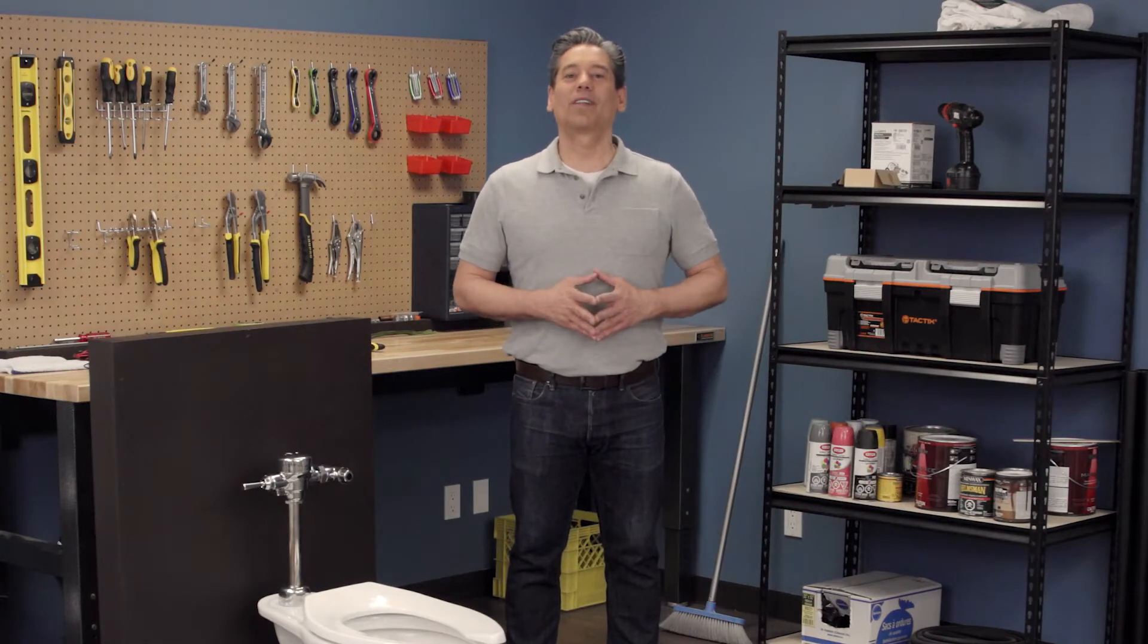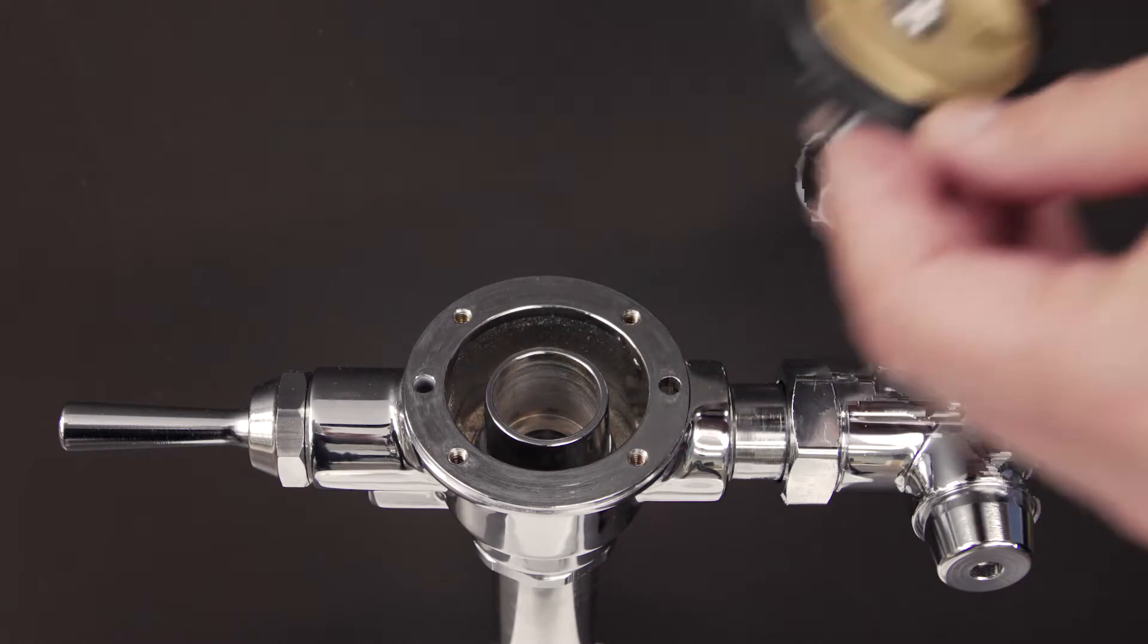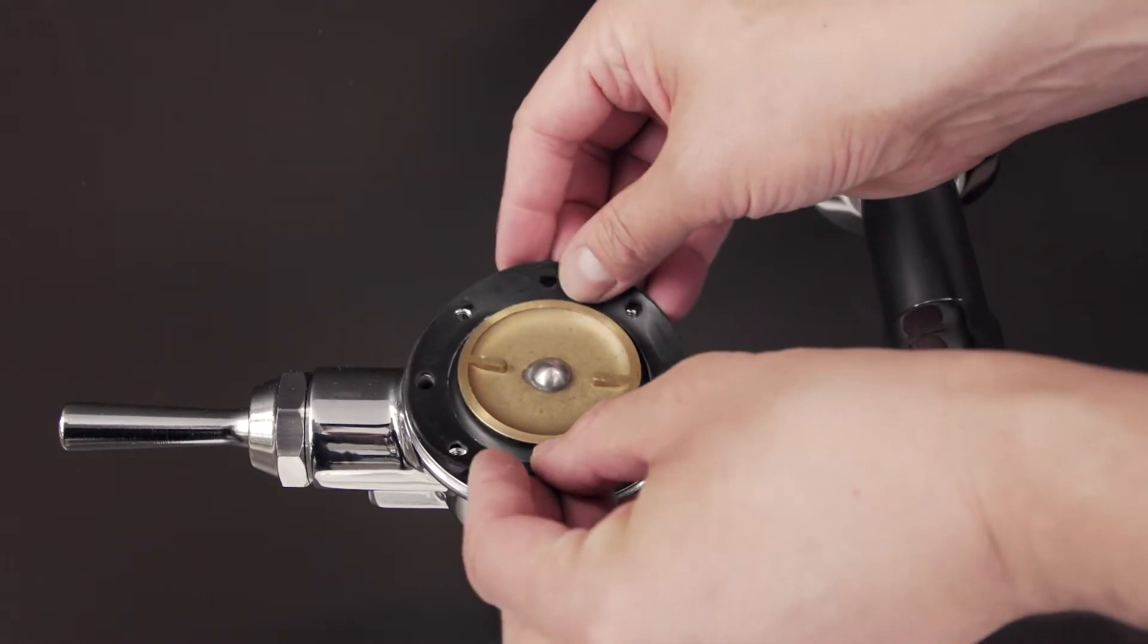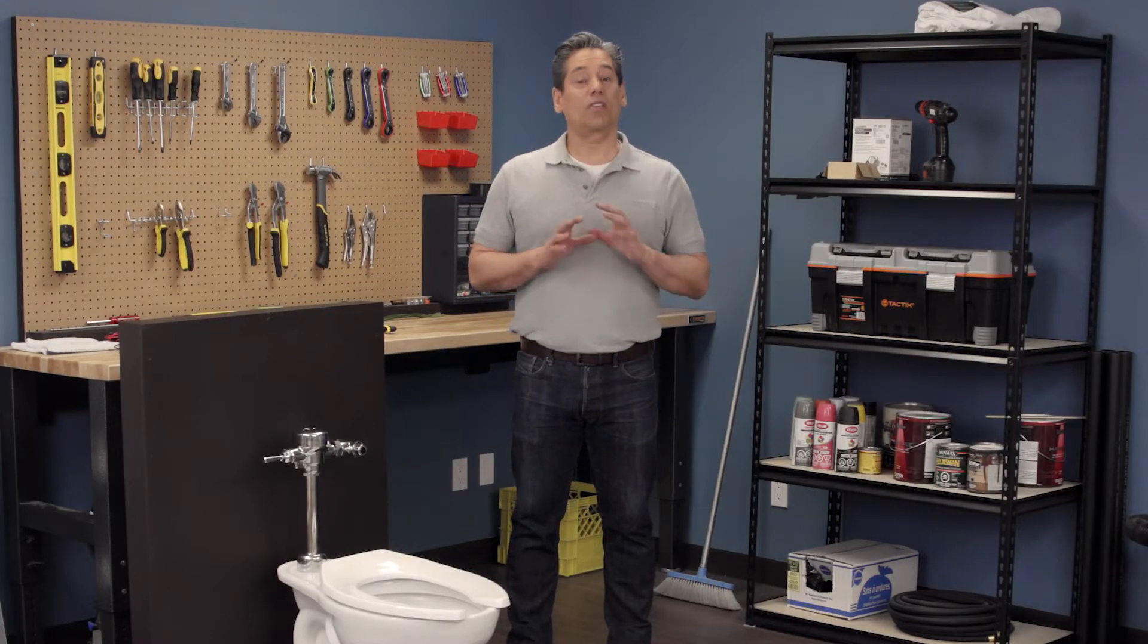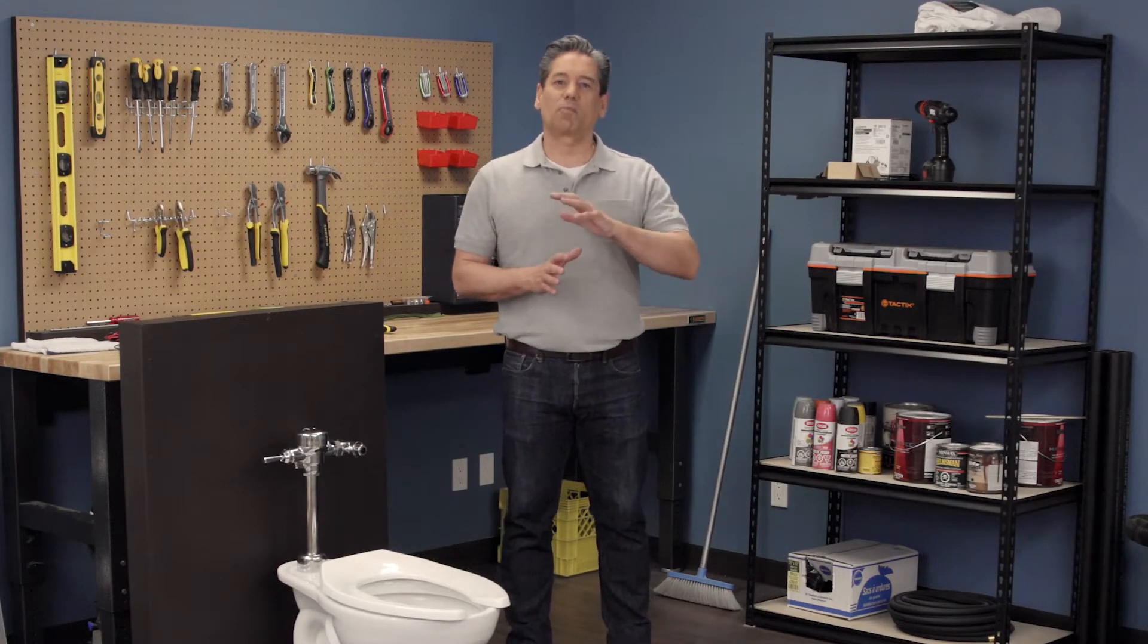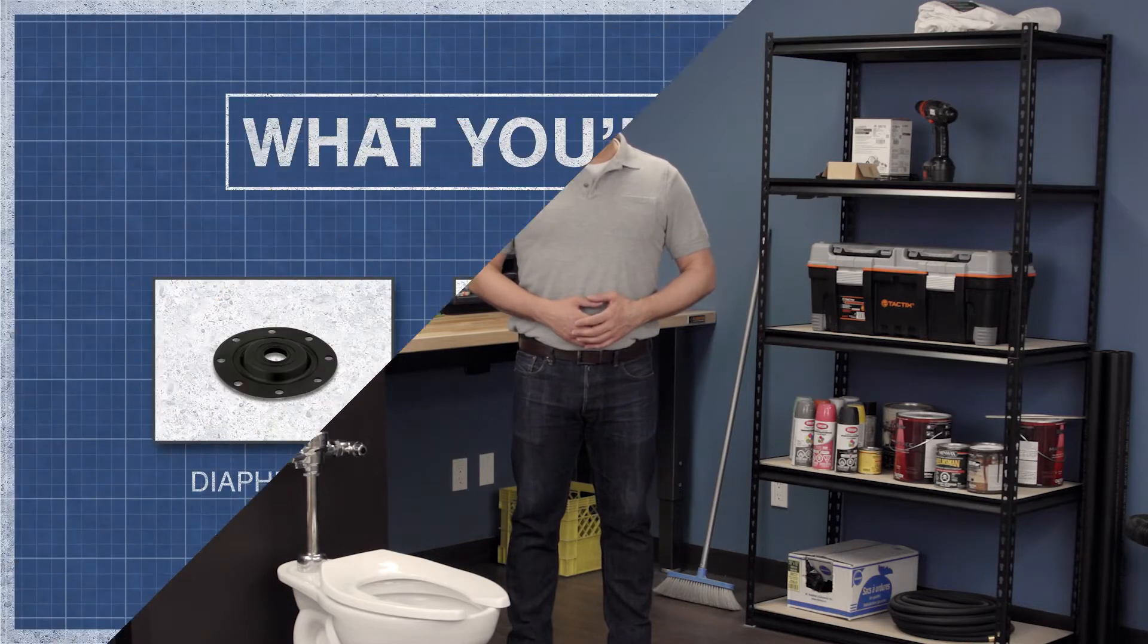Hi, I'm Vance and welcome to Repair and Replace. In this episode we're going to replace the diaphragm in a Delta Tech II manual flushometer. This applies to both urinals and water closets as the models are nearly identical except for the spud diameter and size.